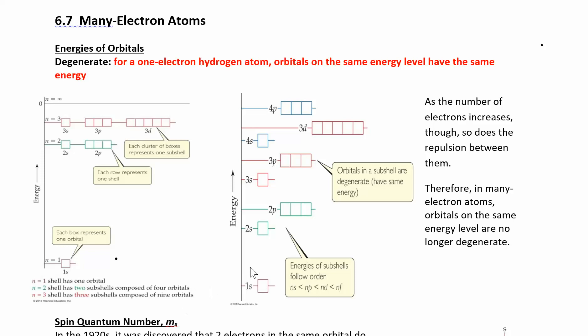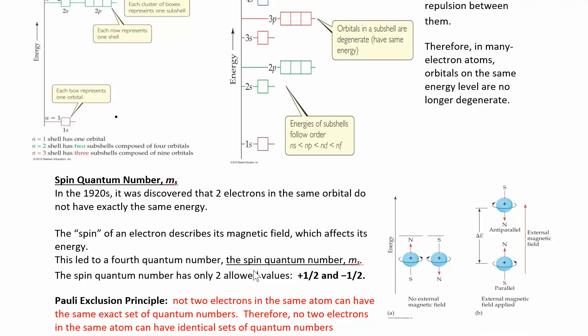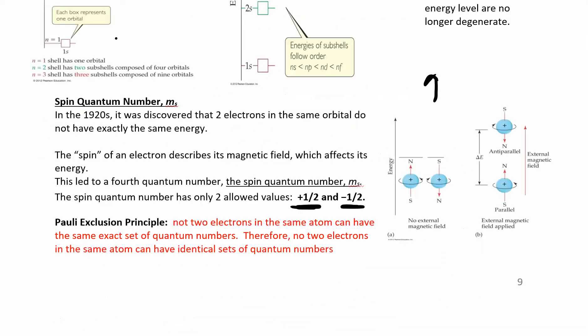We can put two electrons in any given orbital because of the fourth quantum number — the spin quantum number. The other three quantum numbers describe the orbital: energy, shape, and orientation in space. This last quantum number describes the electron itself and distinguishes one electron from another. The two values are plus one-half (spin up) and minus one-half (spin down). This satisfies the Pauli exclusion principle, which says no two electrons in the same atom can have the same set of quantum numbers.